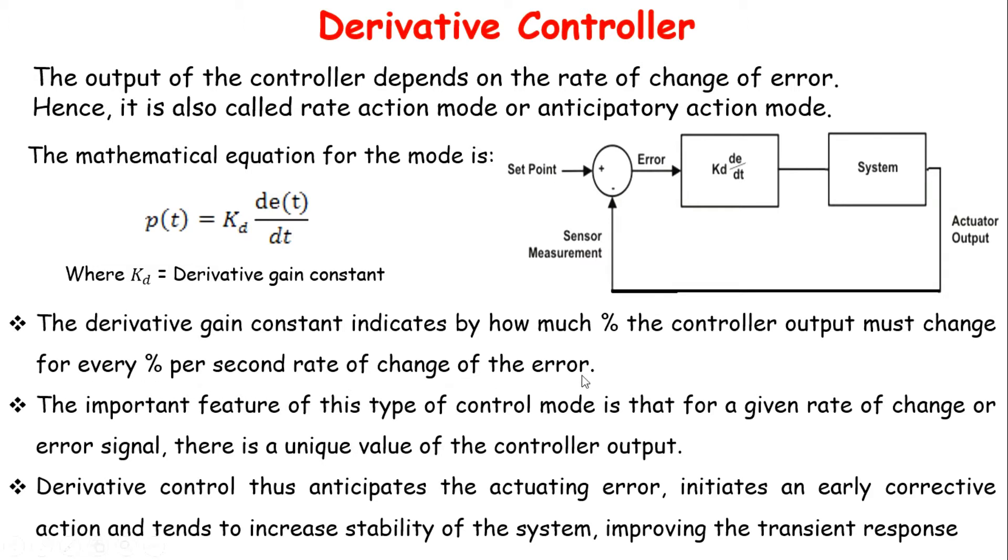The important feature of this type of controller or control mode is that for a given rate of change of error signal, there is a unique value of controller output. Derivative controller thus must anticipate the actuating error, initiates an early corrective action and tends to increase stability of system and improve the transient response.